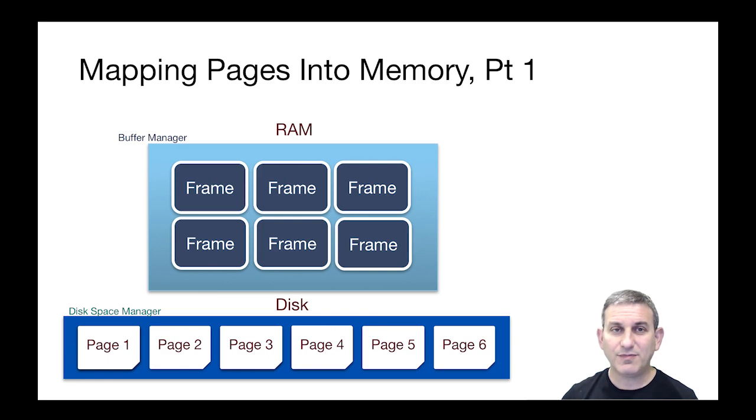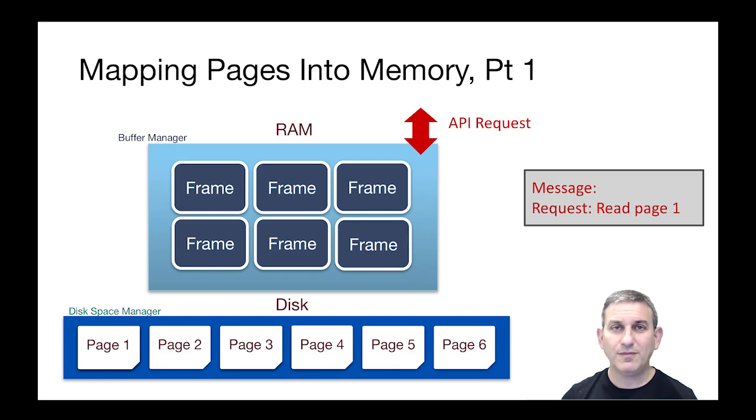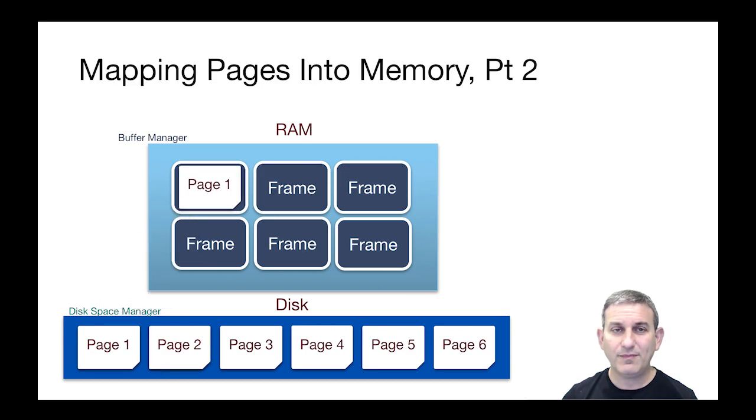So let's look at an example of how this might work. An API request comes into the buffer manager to read a page, page 1 from the disk. Now that page is not in the buffer pool right now. So the buffer manager passes that API request onto the disk and fetches page 1 into an empty frame. And now page 1 can be manipulated in the buffer pool.